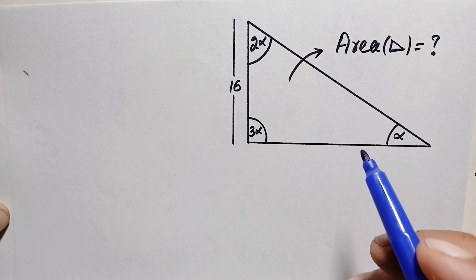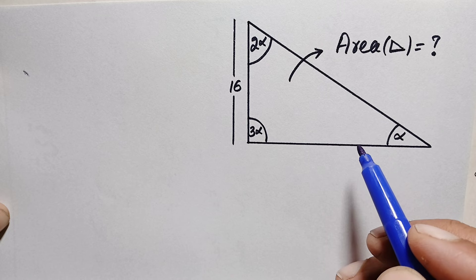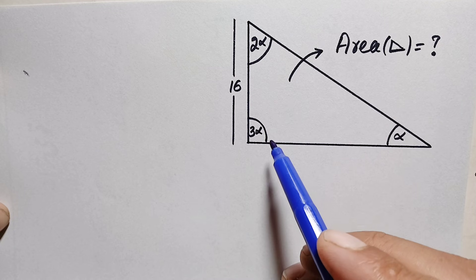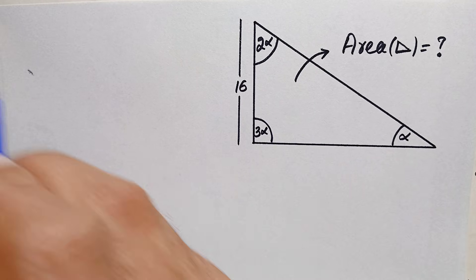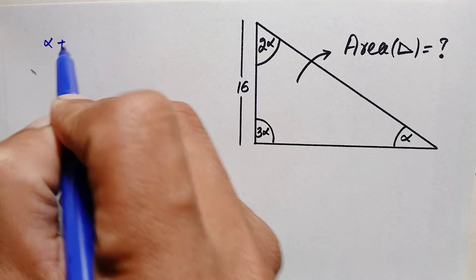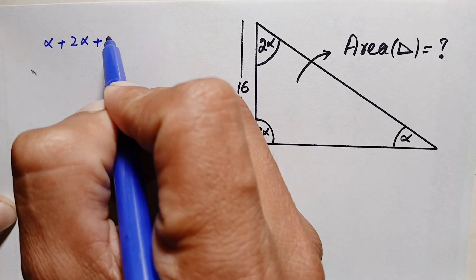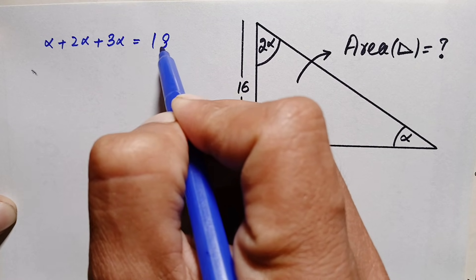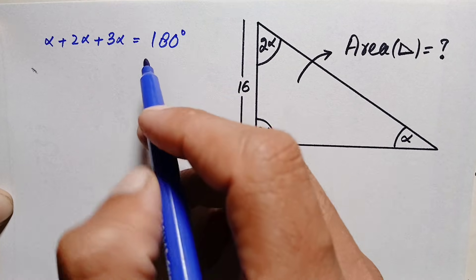To find each angle, we use the fact that the sum of all interior angles of a triangle is always equal to 180 degrees. So the sum of alpha, 2 alpha, and 3 alpha equals 180 degrees.